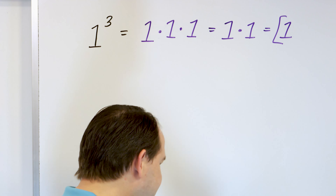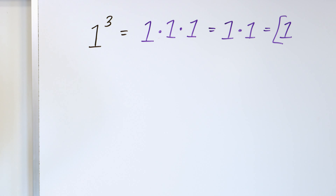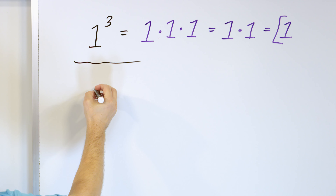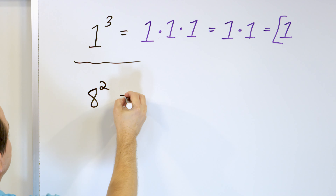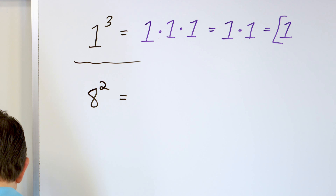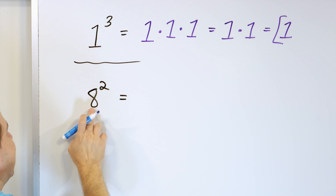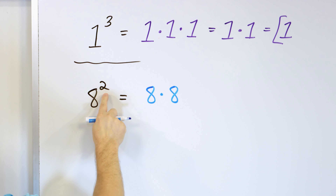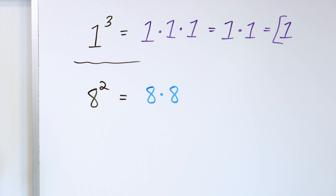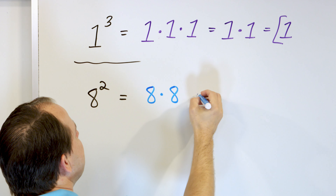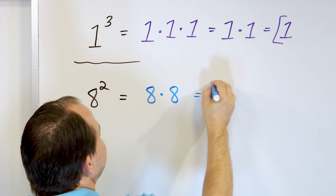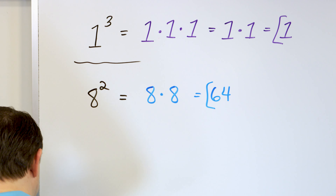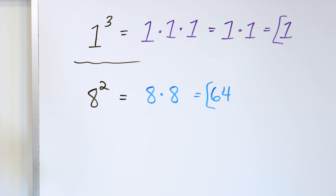What about 8 to the power of 2? We take the base and multiply it by itself — we have 2 on the board because we have a power of 2. 8 times 8 is 64. So we can say that 8 squared is 64, or 8 to the power of 2 is 64.